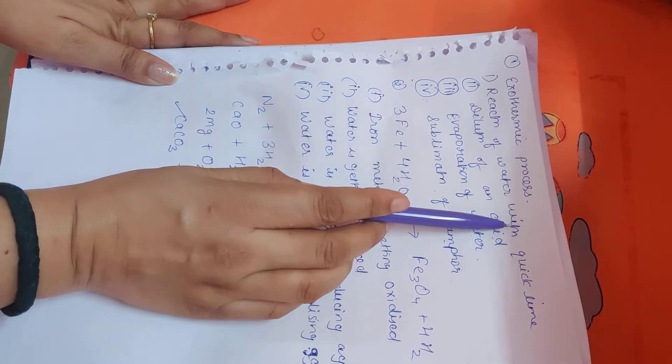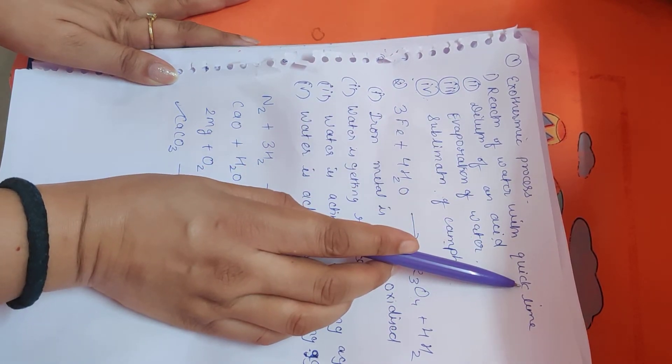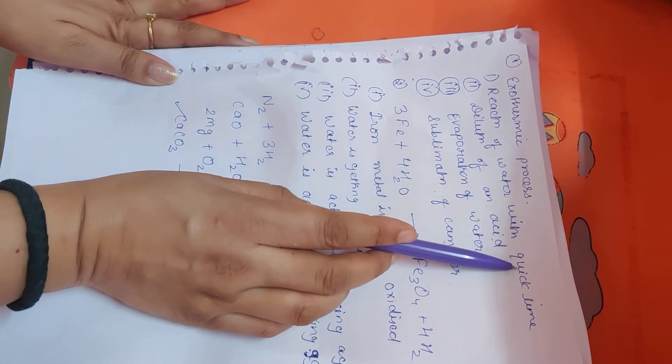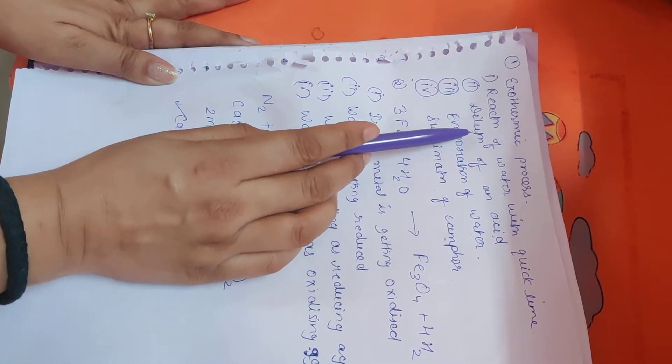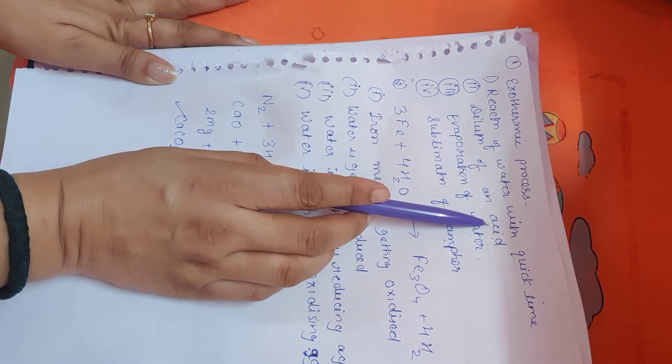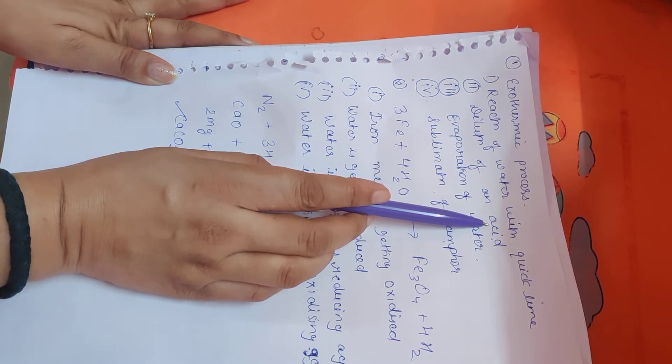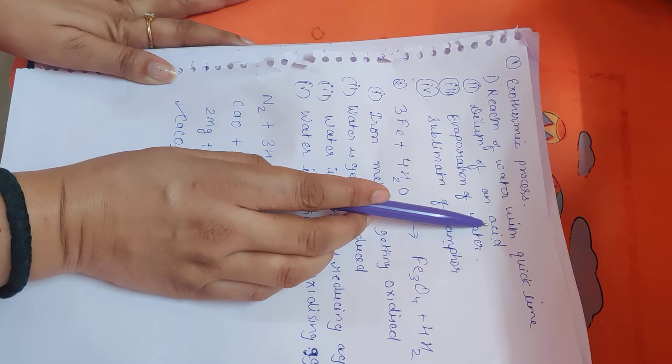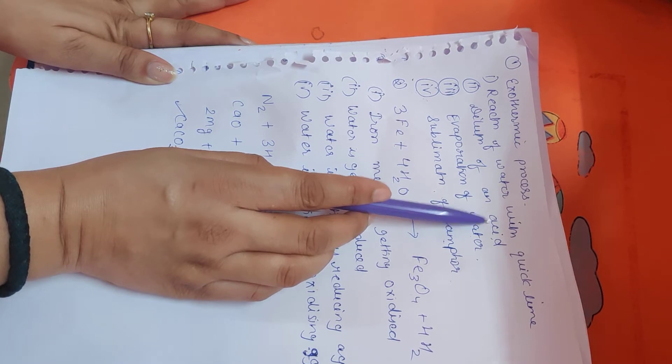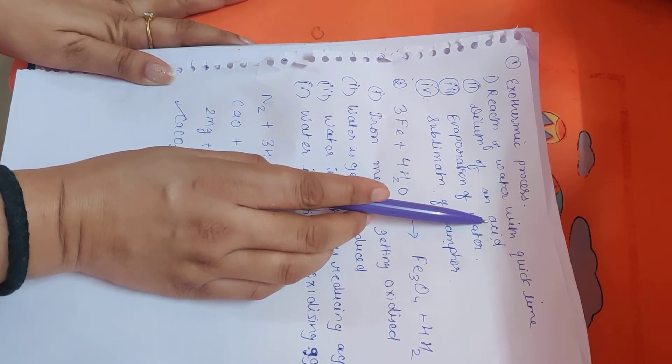So the reaction of water with quicklime, yes, it is an exothermic process. Amount of heat is released during this reaction. Number two, dilution of an acid. Dilution of an acid means when you are mixing water to an acid, definitely heat will release. So it is also an exothermic reaction.